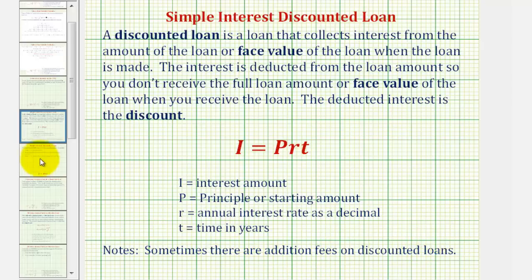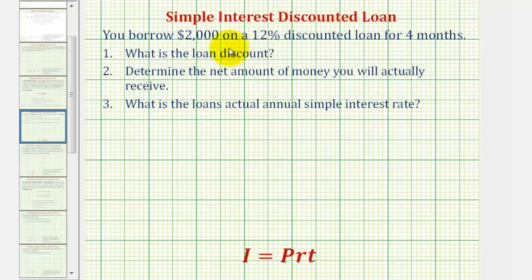Let's take a look at an example. Let's say you borrow $2,000 on a 12% discounted loan for four months. Number one, we want to determine what is the loan discount.